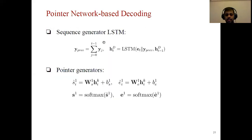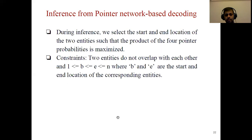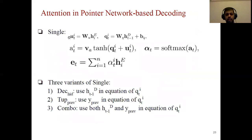The equations describe the sequence generator LSTM, the pointer generators, the entity representation vector, and the relation classification. During inference we select the start and end locations of the two entities such that the product of the four pointer probabilities is maximized. We enforce two constraints: the end index must always be later than the start index, and the two entities must not overlap with each other. We use Bahdanau's attention with three variations applied in the attention equations.